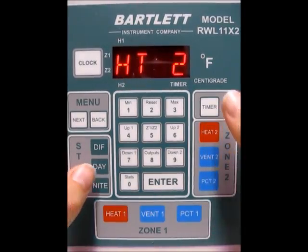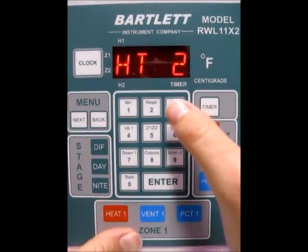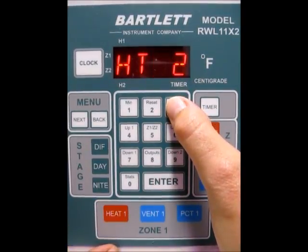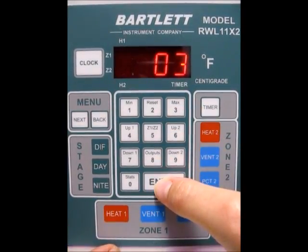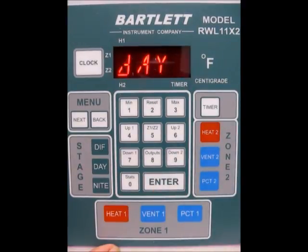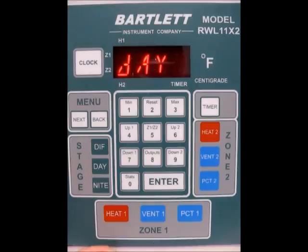So now the same goes for Heat 2. We want to make sure that's at Auto. We're going to program a step size of 3 for Heat 2. And press Enter. And now, again, our output temperature for Heat 2. Now that would be 72 degrees because our target is 75. And that means it will come on at 71 and it will shut off at 73 degrees.